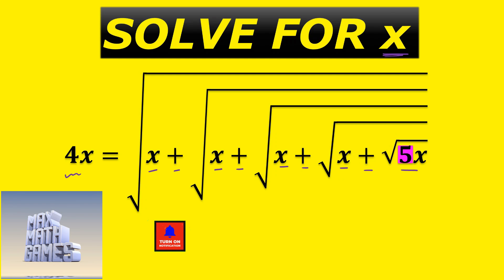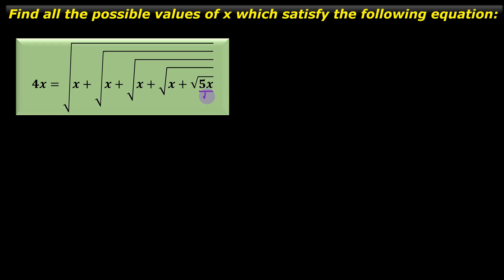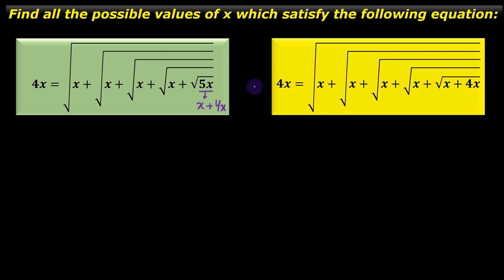Now let us check out this solution. We have this equation in front of us. The first thing we are going to do is observe that here we have 5x, and 5x is actually equal to x plus 4x. So we are going to write the original equation replacing this 5x by x plus 4x.